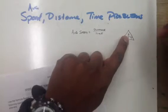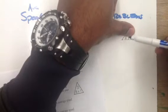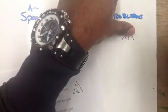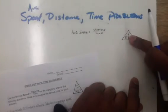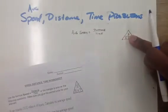If we were looking for the distance, we'd cover up the D, and we can see that distance would be equal to the speed multiplied by the time. Or if we're looking for the time, we could see that time would be equal to distance divided by the speed that we're going.